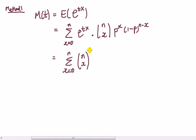So e to the t times p, p to the x. This means that I take x through the bracket, so that's going to be e to the tx, which is that, and then p to the x, times 1 minus p to the n minus x.